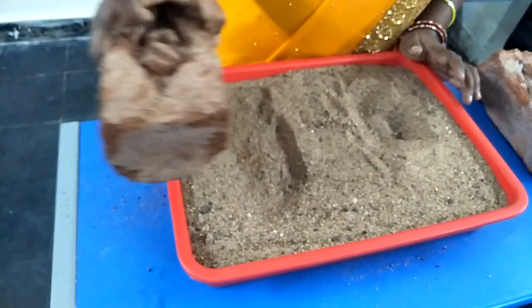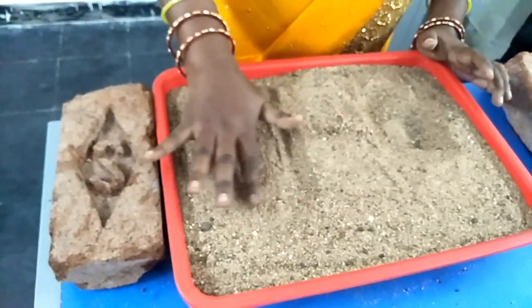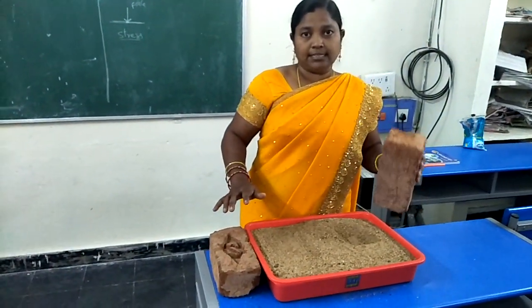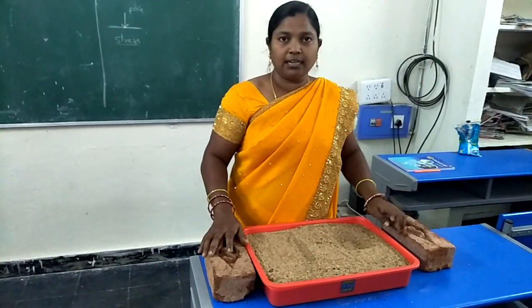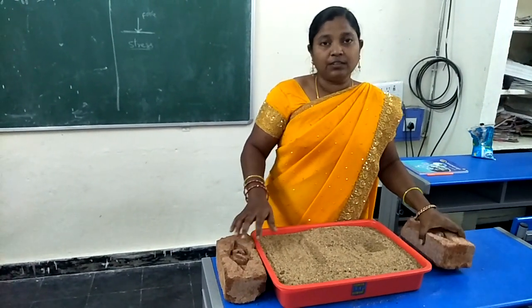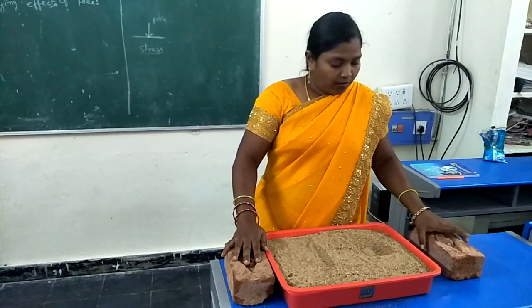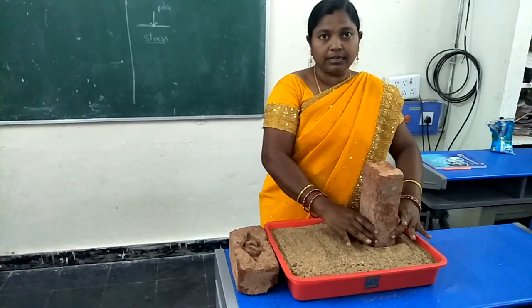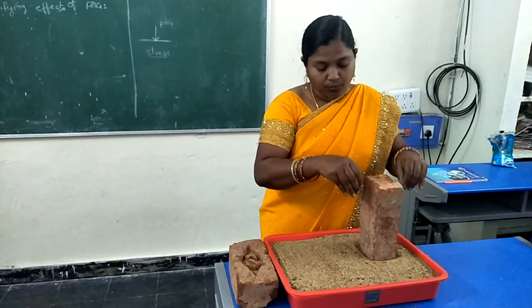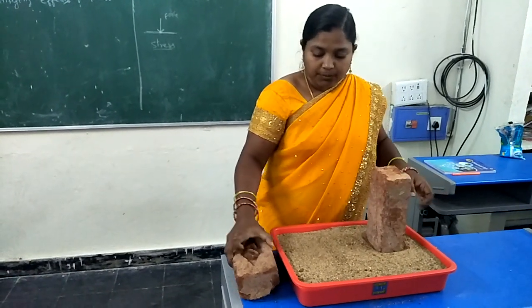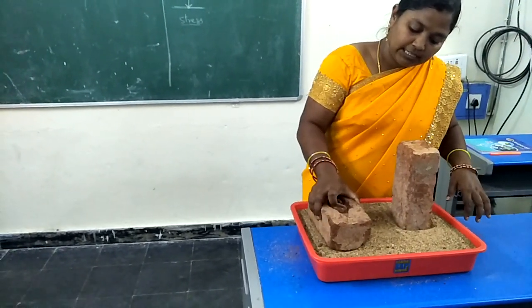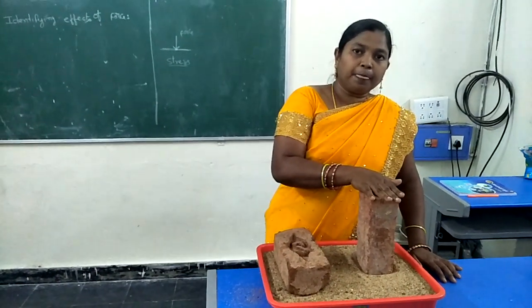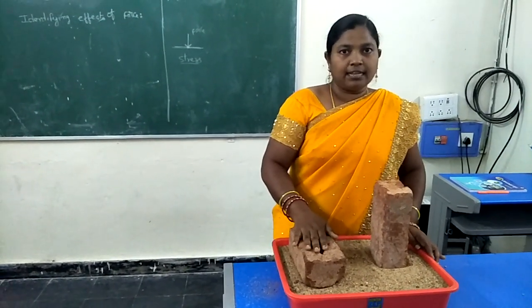The brick dropped vertically sinks more deeply into the sand, while the brick dropped horizontally sinks only a little. Why? Because when the brick enters vertically, all the pressure acts on its smaller surface area, so it goes deeper. The horizontal brick has a larger surface area, so the force is spread out and the pressure is less — that's why it doesn't sink as deep.